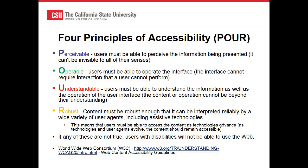The principles include: Perceivable — users must be able to perceive the information; it can't be hidden from their senses. Text links and form controls need to be implemented such that assistive technology can sense their presence. It has to be Operable — users have to be able to work the interface. They need to be able to operate the input controls and links either by keyboard, with assistive technology, or with the mouse. It also needs to be Understandable — users must be able to understand the information as well as the operation of the user interface.